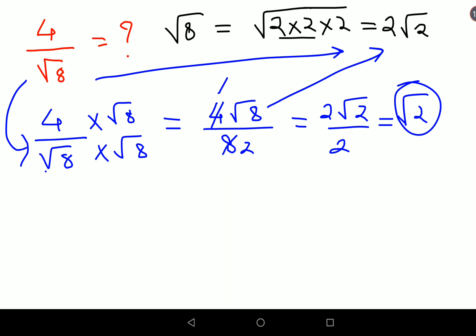Whenever you have a root in your denominator, go ahead and directly multiply it, and then at the end think of simplifying. It is much easier to do that.